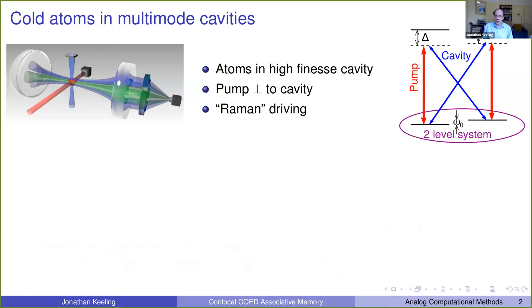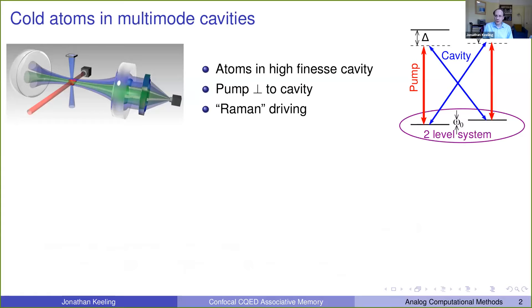What we want to discuss is using cold atoms in an optical cavity as a way to realize an associative memory. And what we really mean by that is using this kind of setup where you have atoms trapped in a high finesse cavity and pumped from the side by this beam in red in such a way that it gives a Raman scheme where there is a two-level system, two low-lying states of the atoms. And these are coupled by absorbing a pump photon and emitting a cavity photon, allowing you to control the effective pump cavity detuning.